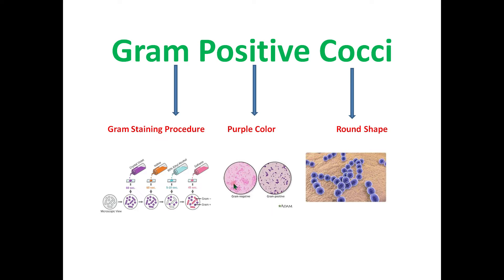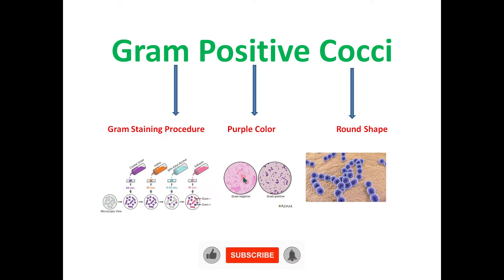You can appreciate the difference between the gram-negative bacteria which are pink in color and the gram-positive bacteria which are purple in color and round in shape. On the gram staining procedure these bacteria give purple color, which is because of the presence of the thick peptidoglycan layer present in the gram-positive bacteria.